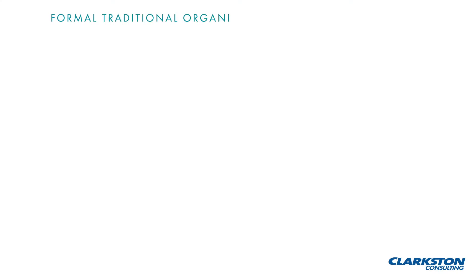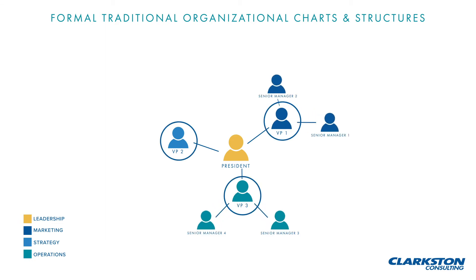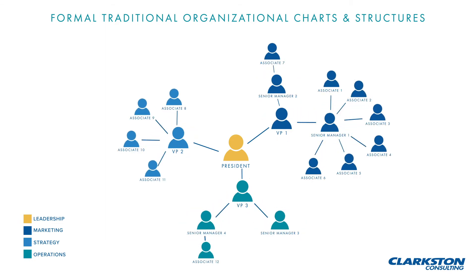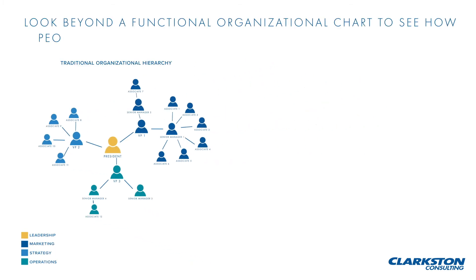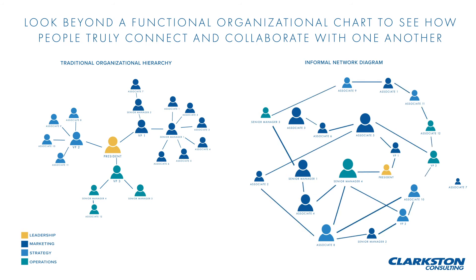Many of us are familiar with formal traditional organizational charts and structures. We would typically assume that the VPs or senior managers in top positions of teams are most important to influence and drive change — they are often the people making decisions on vision and direction. Looking at informal collaboration networks, however, we see the key influencers that a traditional organizational chart typically couldn't share.